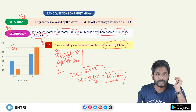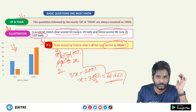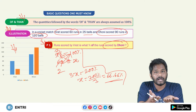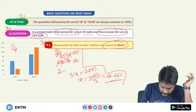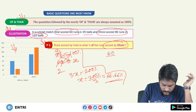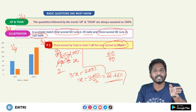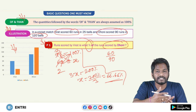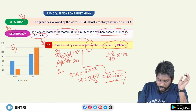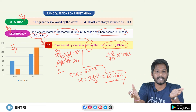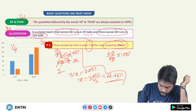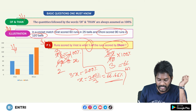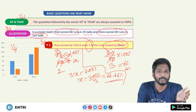This is the basic approach. The alternative method: we compare Virat's score to Dhoni's score as a ratio — 60 by 90 in the denominator. To get the percentage, we multiply the ratio by 100%. Cancel 0 with 0, giving 3 two times and 3 three times. So 2 by 3 into 100 is nothing but 66.66%.